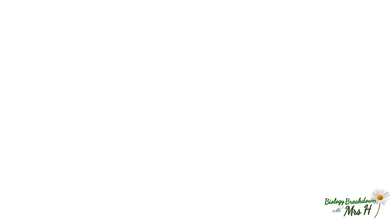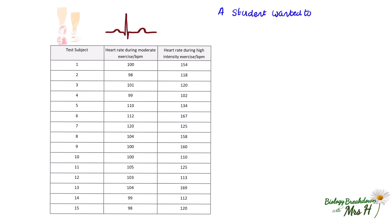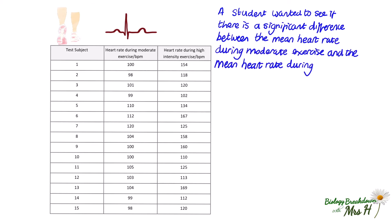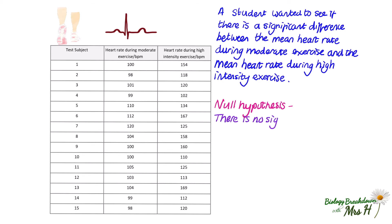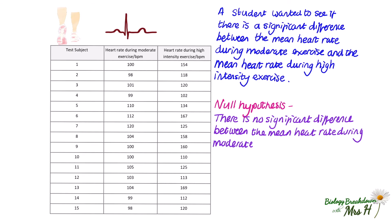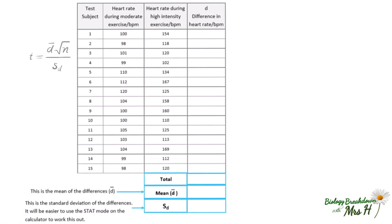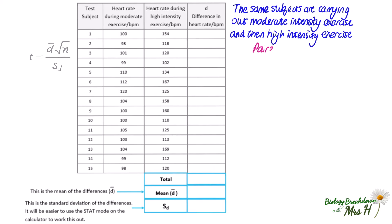Let's look at an example. A student wanted to see if there is a significant difference between the mean heart rate during moderate exercise and the mean heart rate during high intensity exercise. The null hypothesis is: there is no significant difference between the mean heart rate during moderate exercise and the mean heart rate during high intensity exercise. Because both exercise conditions are carried out by the same subjects, we use the paired student's t-test. Creating an extra column makes it easy to calculate the differences between heart rates, from which we calculate d-bar and then sd.